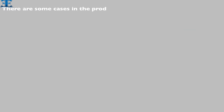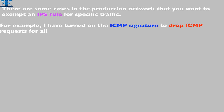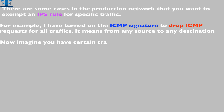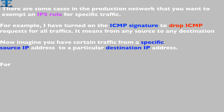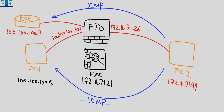There are some cases in the production network where you want to exempt an IPS rule for specific traffic. For example, I have turned on the ICMP signature to drop ICMP requests for all traffic — meaning block it from any source to any destination. Now imagine you have certain traffic from a specific source IP address to a particular destination IP address, and for ping between these two IP addresses, you want to generate an event in your IPS and not drop the ICMP traffic. This is the diagram and topology, and now we want to test and deploy several scenarios.